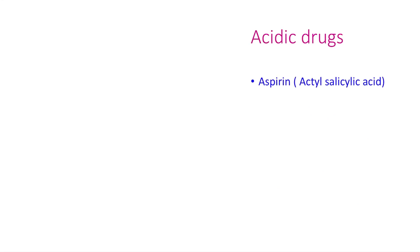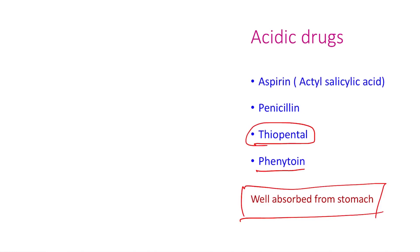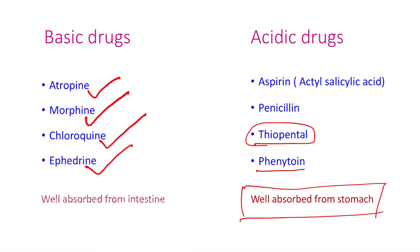Examples of acidic drugs include aspirin, penicillin, thiopental sodium, and phenytoin — used in epilepsy and general anesthesia. These acidic drugs get better absorbed from acidic medium, that is, from the stomach. Examples of basic drugs include atropine, morphine, chloroquine, and ephedrine. Basic drugs get better absorbed from the intestine, where the environment is more basic.